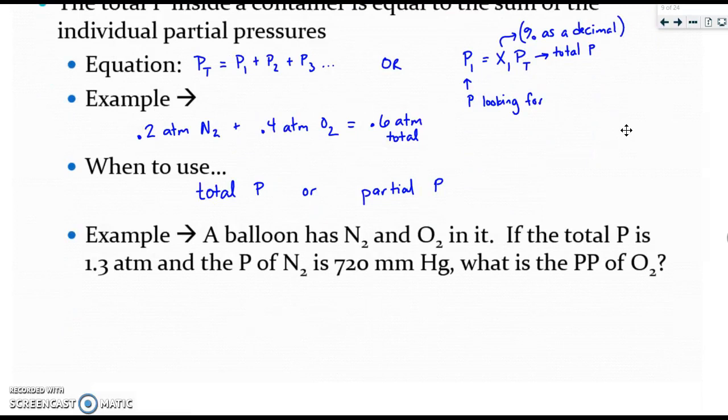So the example problem here says that a balloon has nitrogen and oxygen. It tells you the total pressure as well as the pressure of nitrogen and then it asks for the partial pressure of oxygen. The units for pressure do not match so we need to make them match. I chose to divide my mmHg into atm so I'm going to divide by 760 and I end up getting 0.947 atm and then I just plug my numbers in.